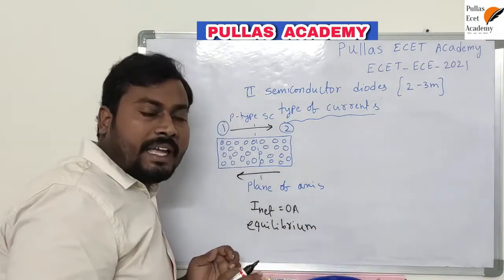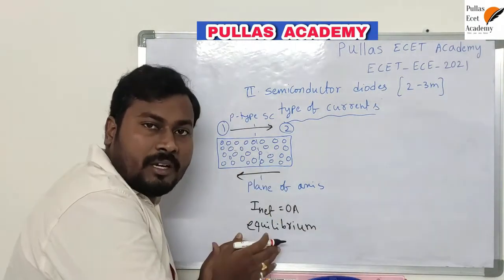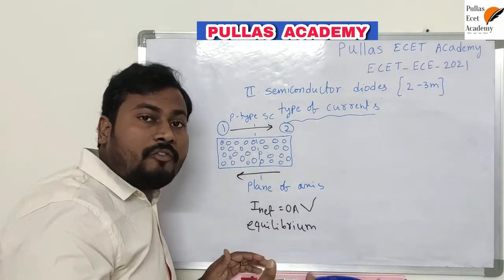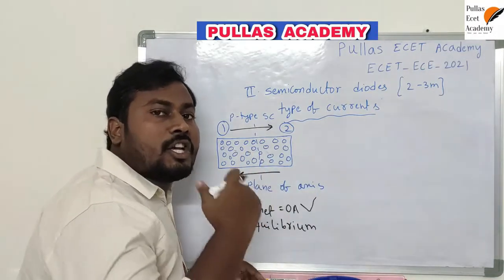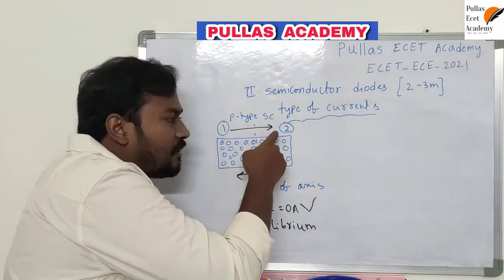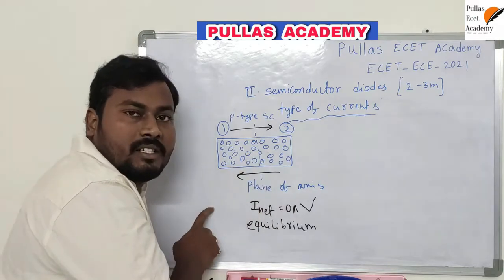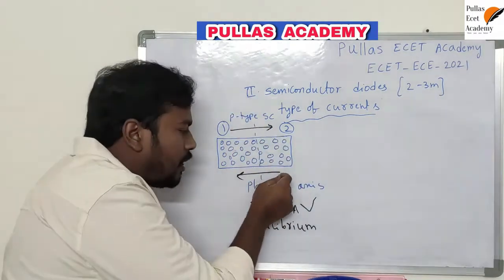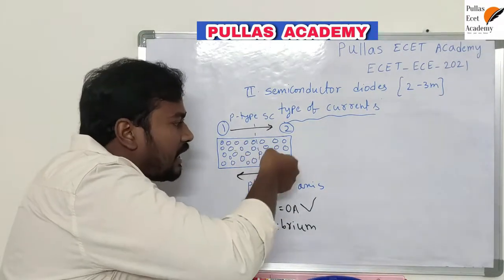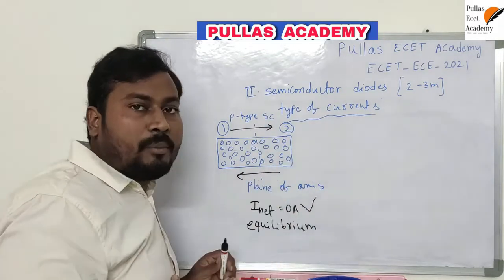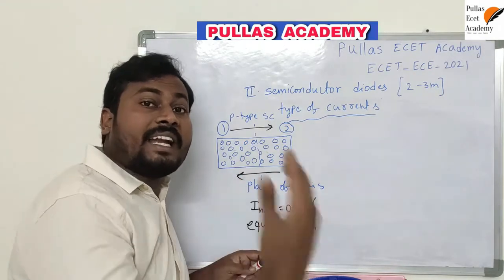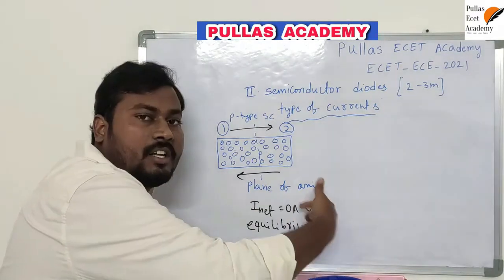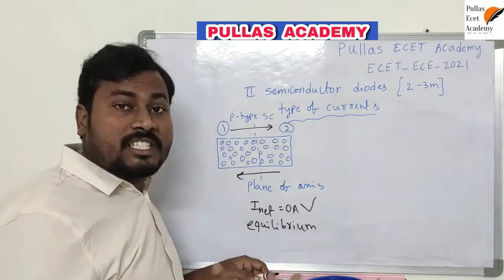When the semiconductor is in equilibrium, the net current is equal to 0 amperes. Equilibrium condition means: if there is a process happening at some rate, there will be an inverse process happening at the same rate. If 10 holes move from plane 1 to 2, then 10 holes also move from plane 2 to 1 simultaneously. We want to get current in the semiconductor, so we have to disturb this equilibrium condition.